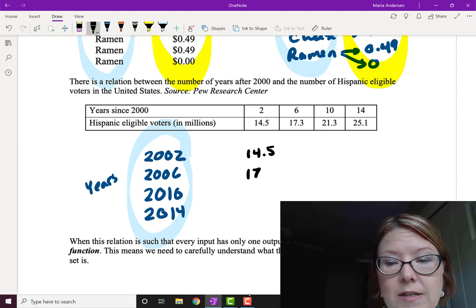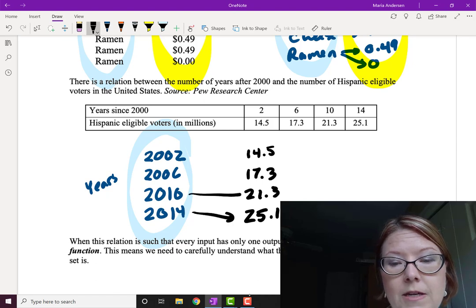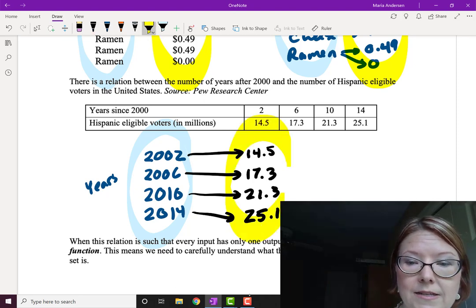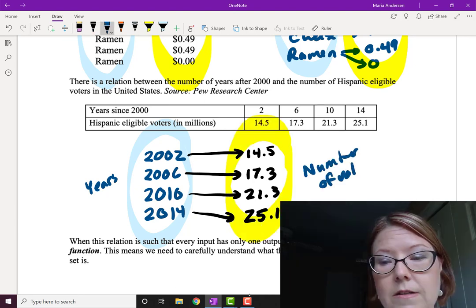And so that would be 14.5, 17.3, 21.3, and 25.1. Each year gives us a different value. So that set is the number of voters in millions.